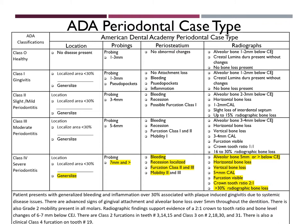My ADA periodontal case type reads as follows. Patient presents with generalized bleeding and inflammation over 30% associated with plaque-induced gingivitis due to systemic disease issues. There are advanced signs of gingival attachment and alveolar bone loss over 5 mm throughout the dentition. There is also grade 2 mobility present in all molars. Radiographic findings support evidence of a 2 to 1 crown to tooth ratio and bone level changes of 6 to 7 mm below CEJ. There are class 2 furcations in teeth number 3, 14, 15, and class 3 on number 2, 18, 30, and 31. There is also a clinical class 4 furcation on tooth number 19.